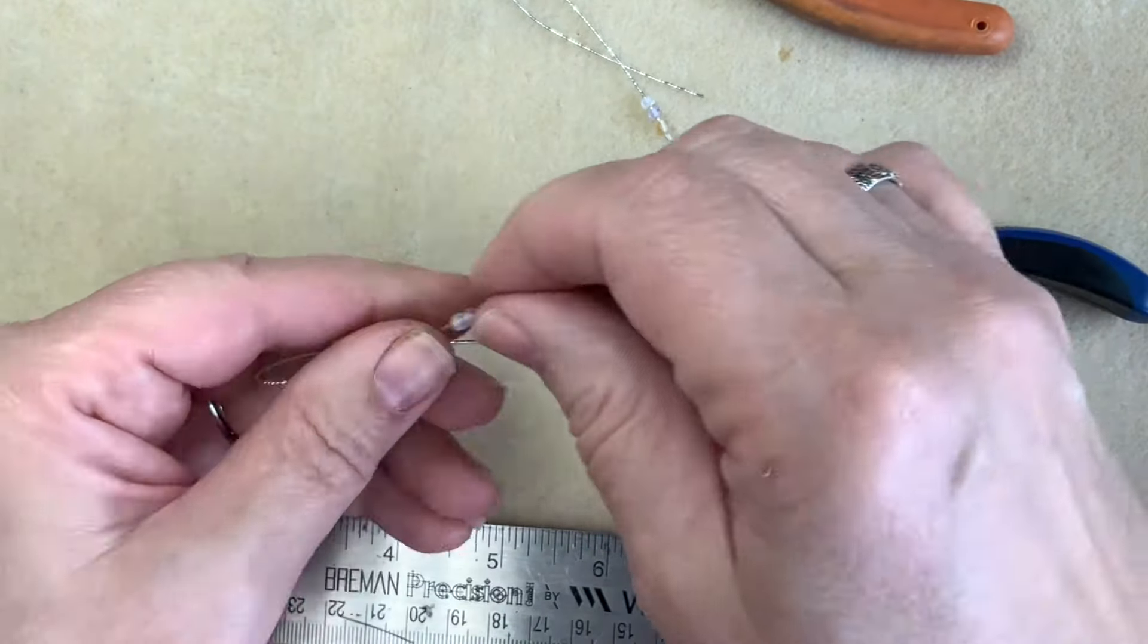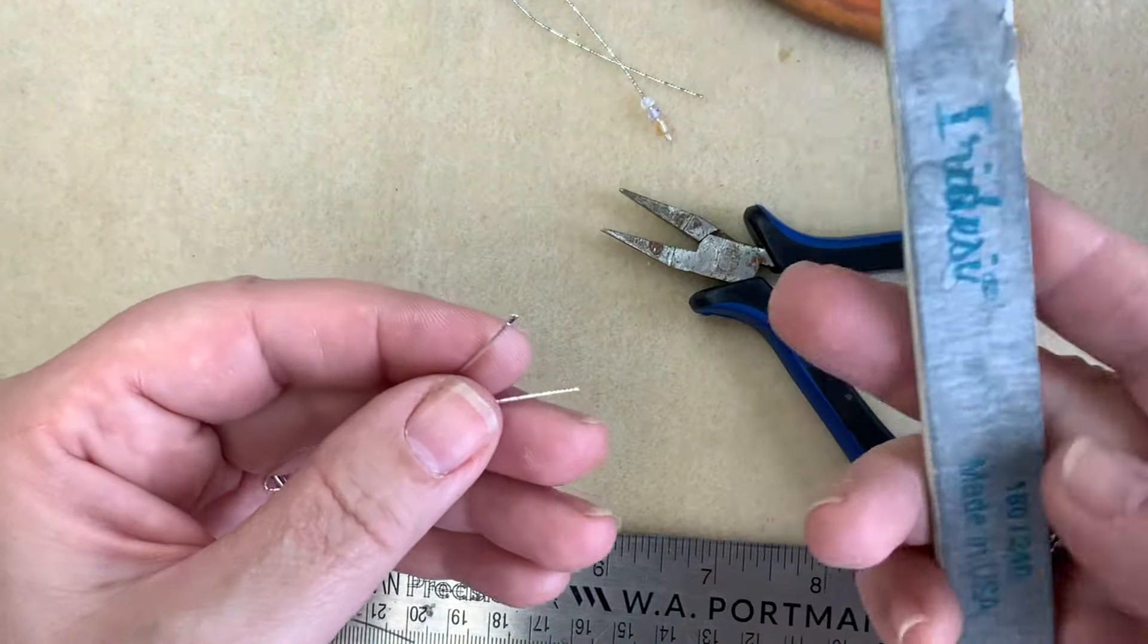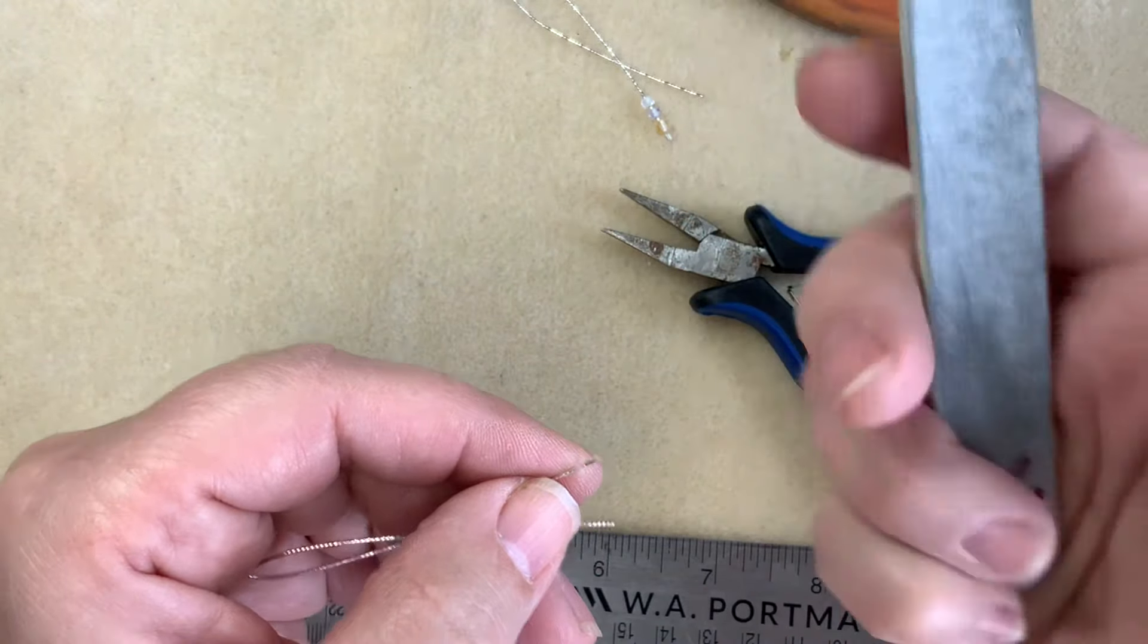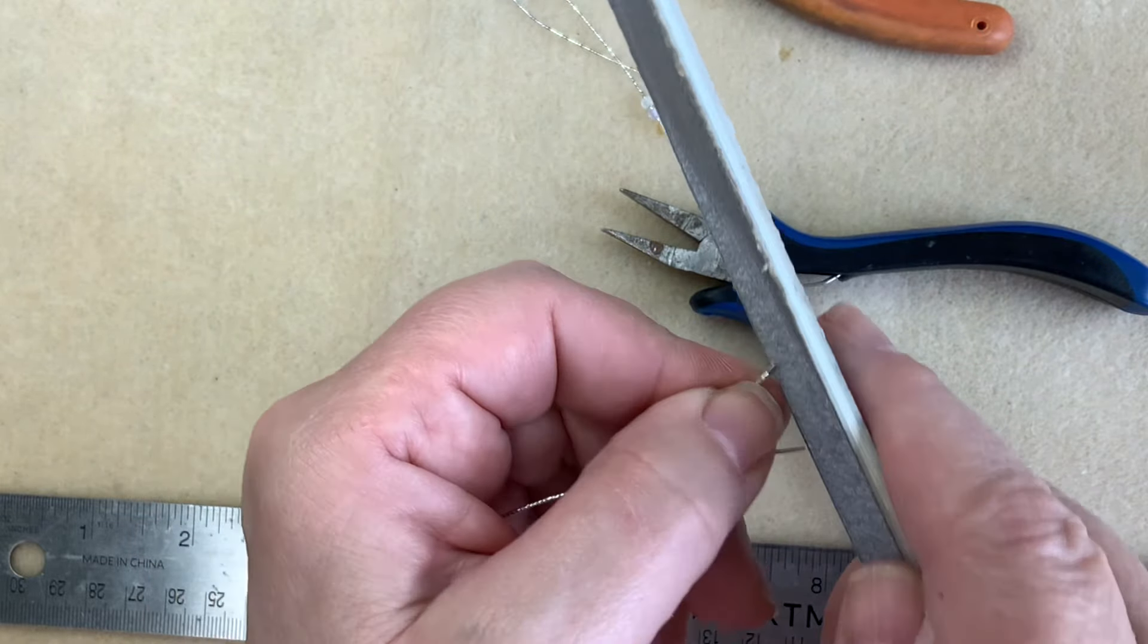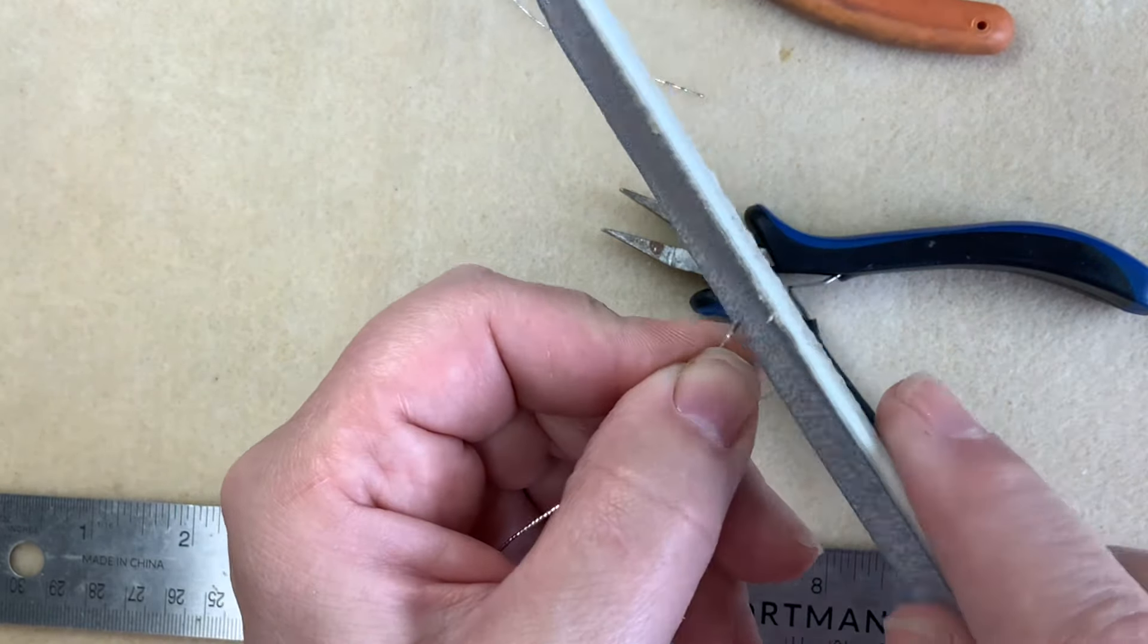Now, because we did that, this is a little bit sharp. So you just want to take a nail file and this is the 240 grit side. So it's not very rough. And I'm just going to round, see how I'm at a pretty steep angle. I just want to round the edges.